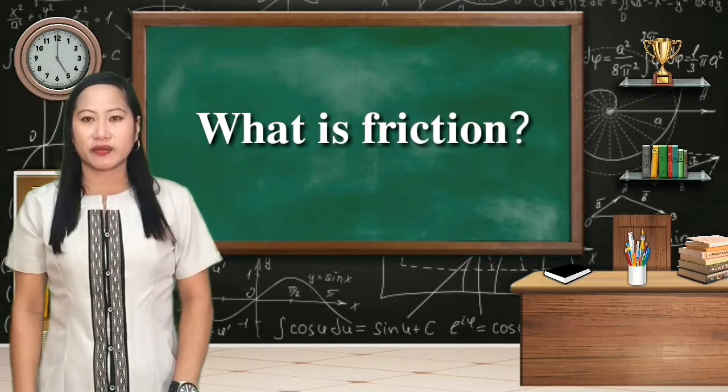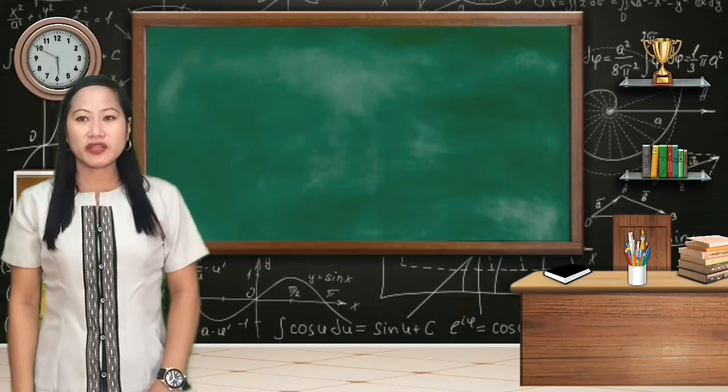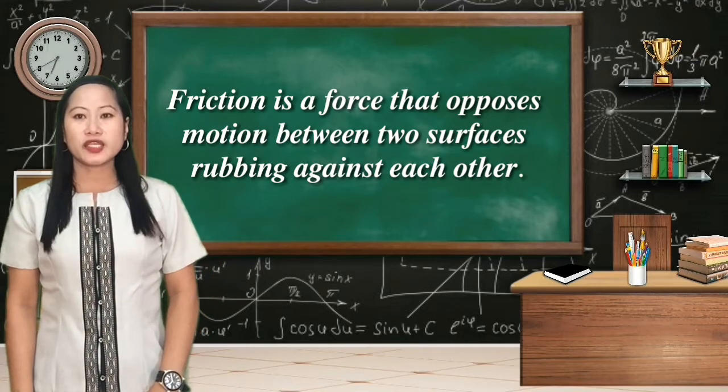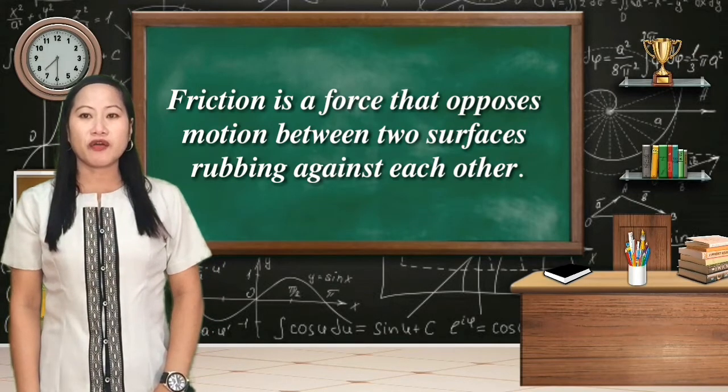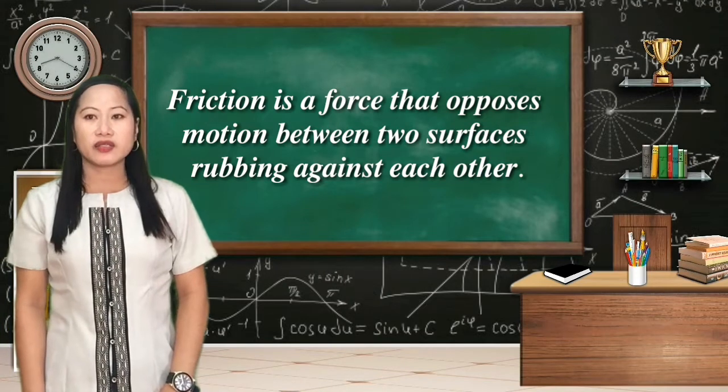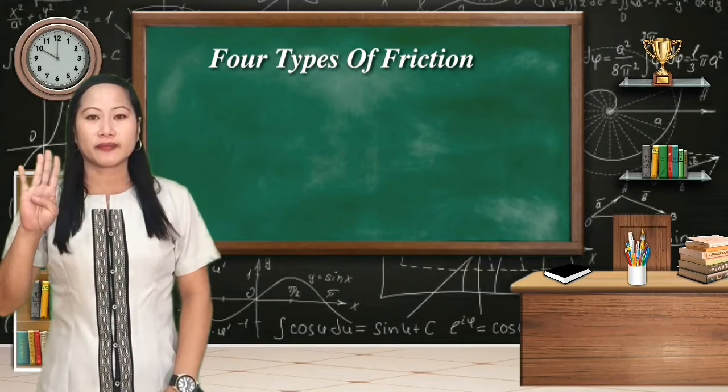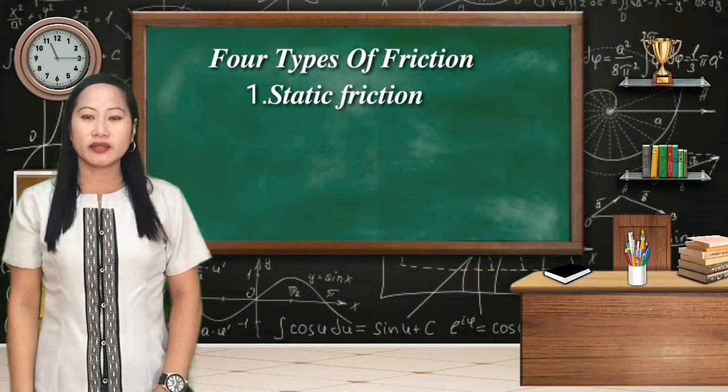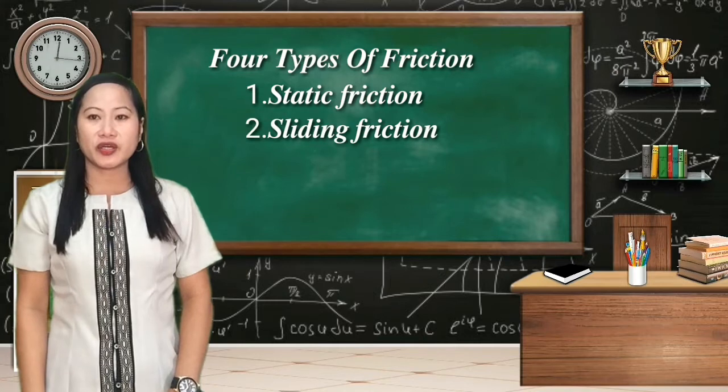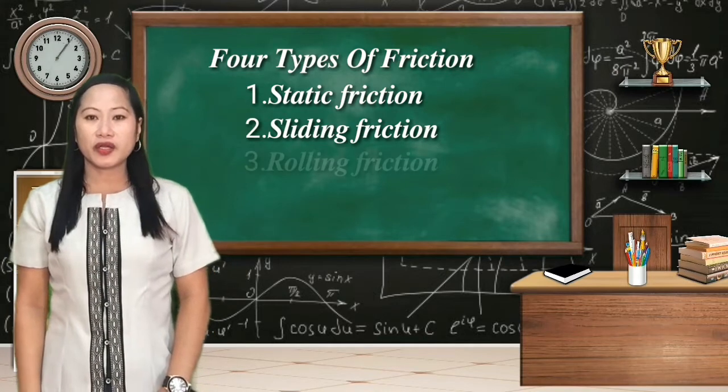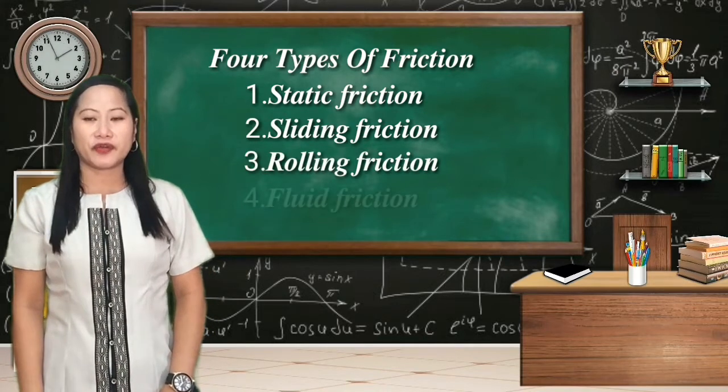What is friction? Friction is a force that opposes motion between two surfaces rubbing against each other. There are four types of friction: static friction, sliding friction, rolling friction, and fluid friction.